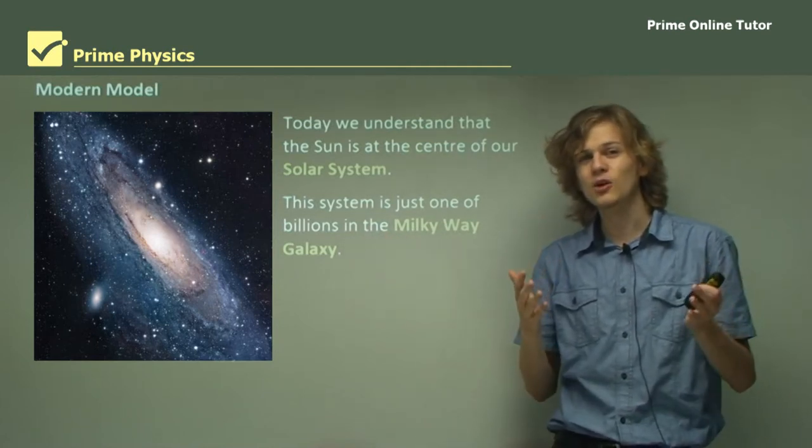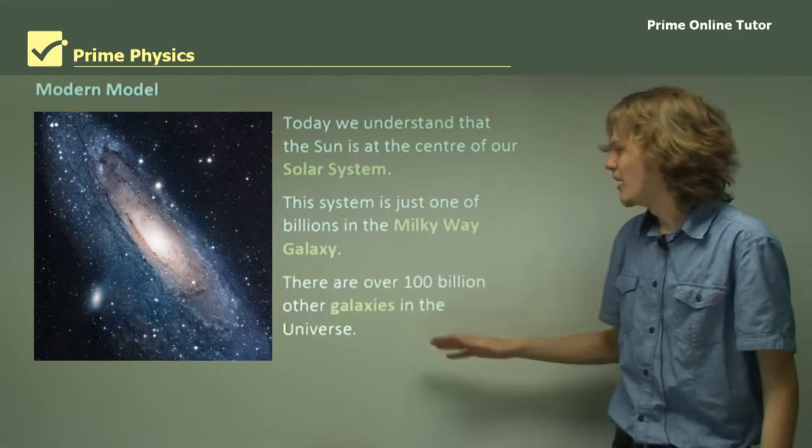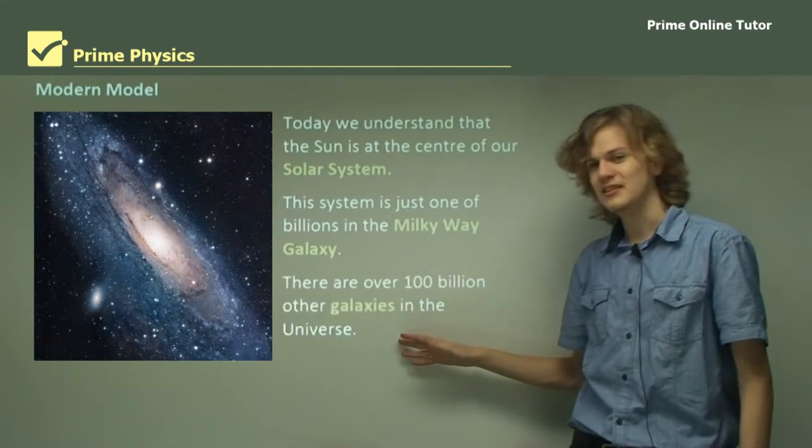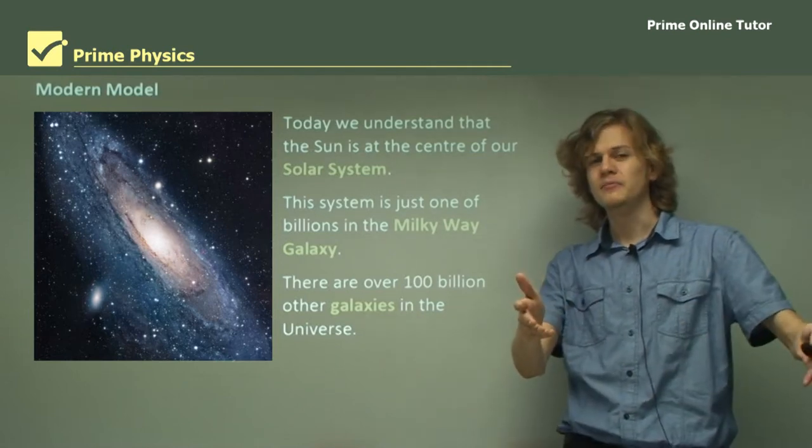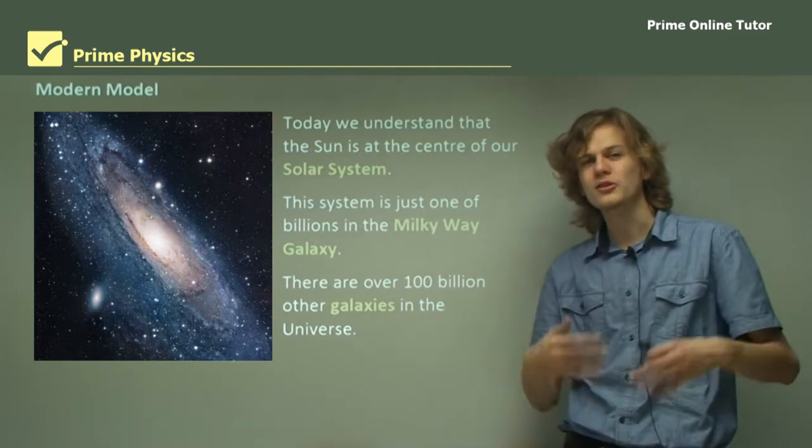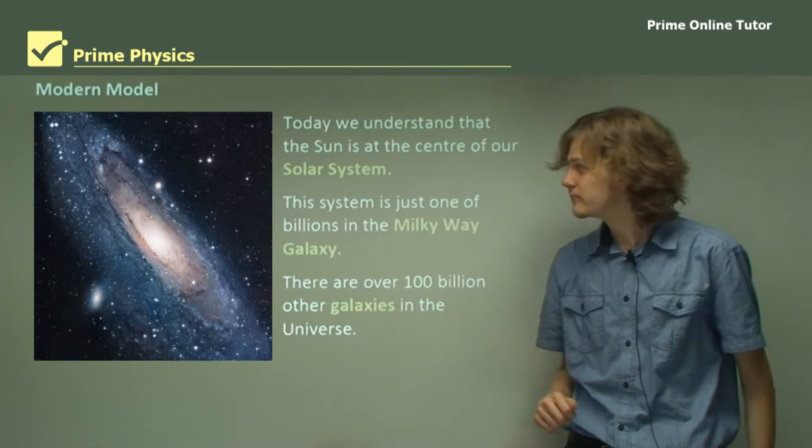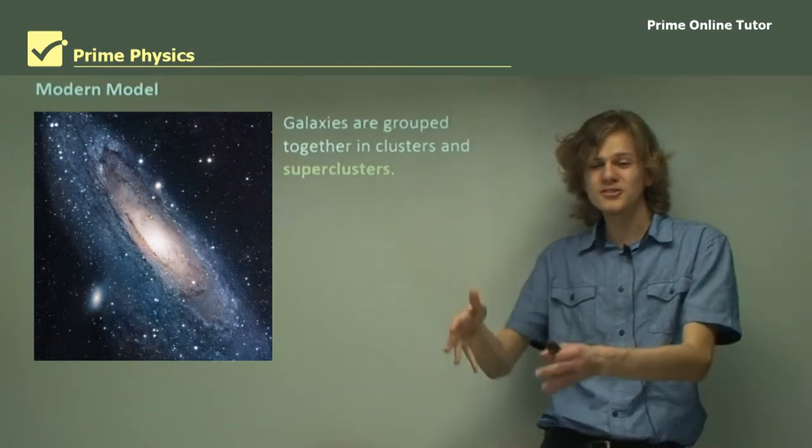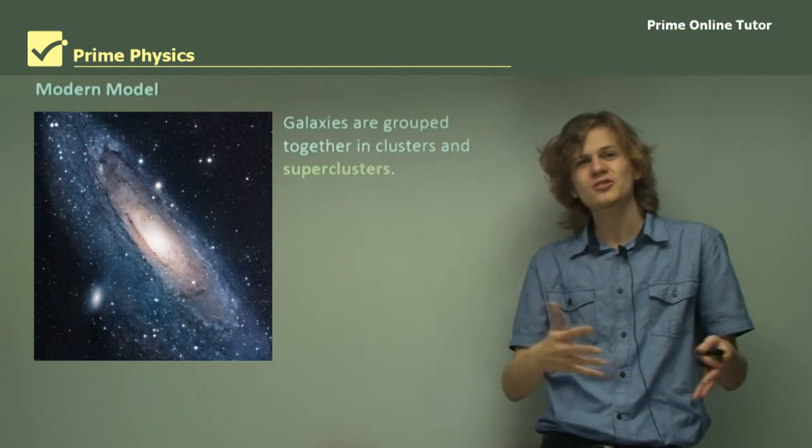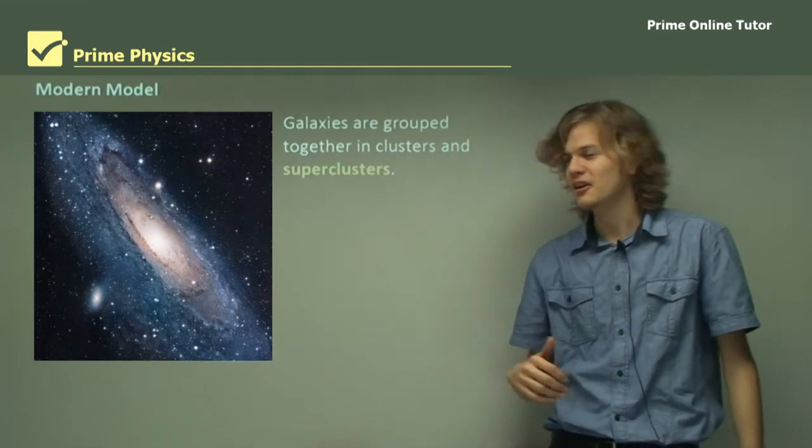The Milky Way galaxy itself is not unique either. There are 100 billion other galaxies in the universe, at least. And that's just all that we can see. There may be some even further off from which the light hasn't yet reached us. Galaxies are grouped together in clusters, and those clusters are grouped together in superclusters.